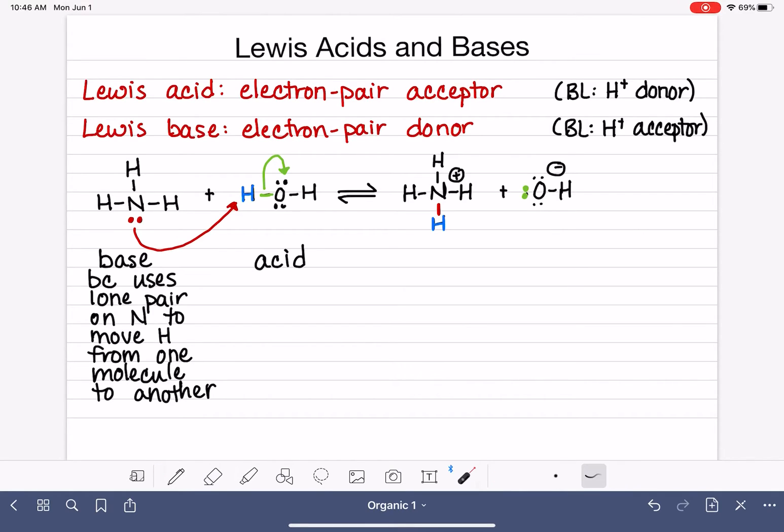And then what about our acid? By the Lewis method, the acid is the electron pair acceptor. So this pair of electrons that are being used to facilitate the movement of one atom from one molecule to another molecule, these electrons are being accepted by the hydrogen of the acid. So this is an acid because the hydrogen accepts the lone pair and moves to the base.